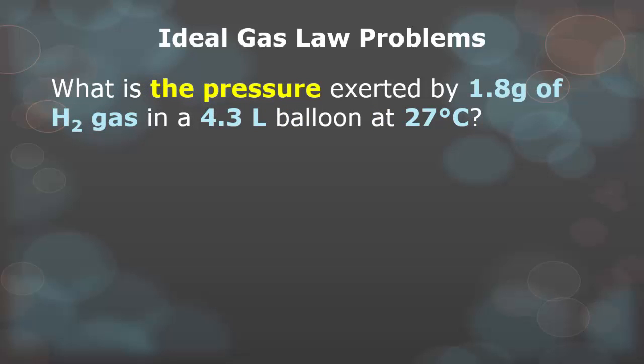The second problem states that we are looking for the pressure exerted by 1.8 grams of H2 gas. You have to convert that into how many moles 1.8 grams is. We have a balloon that is 4.3 liters at 27 degrees Celsius. The two conversions you have to do is grams to moles of H2 gas, and we have to convert 27 degrees Celsius into Kelvin.